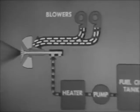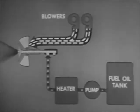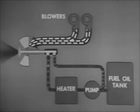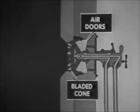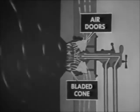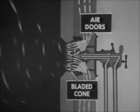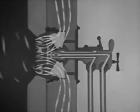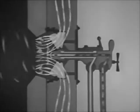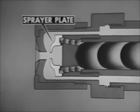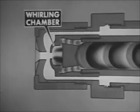In this type of burner — the return flow pressure atomizer — only part of the oil that goes through the burner is actually burned; the remainder returns to the fuel oil pump. Air doors and a bladed cone give the whirling motion to the air that enters the register to mix with the oil, as in the burner seen previously. The oil, heated and under pressure, is forced through the inner tube of the burner barrel to the sprayer plate, where the oil is rotated in the whirling chamber.